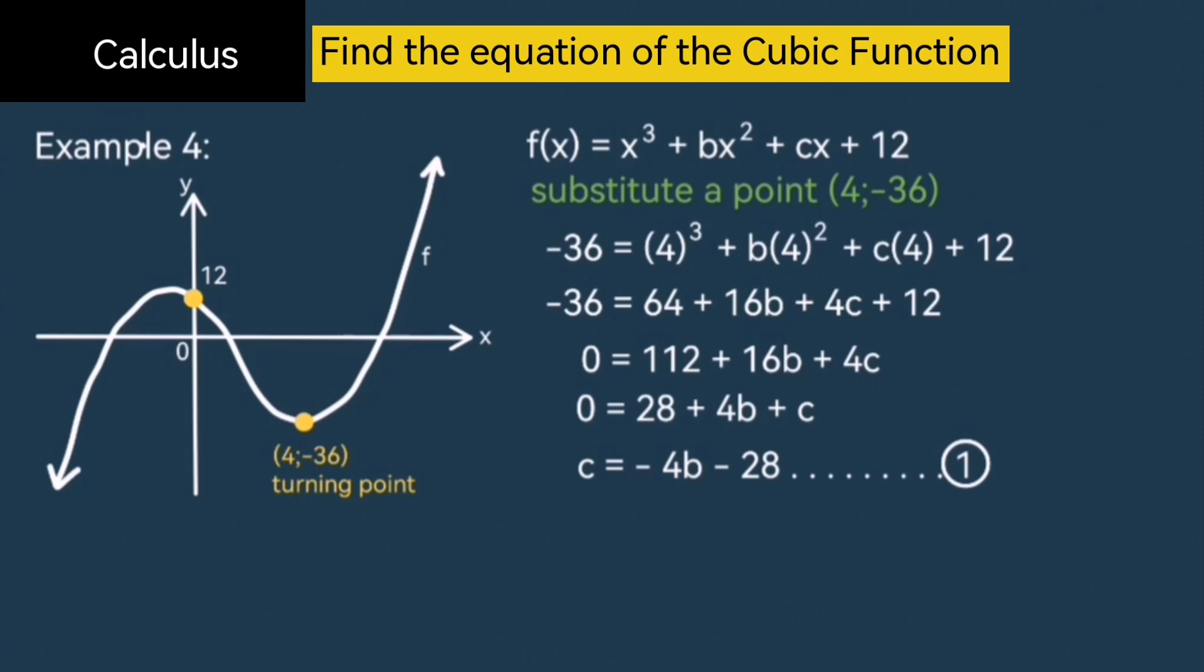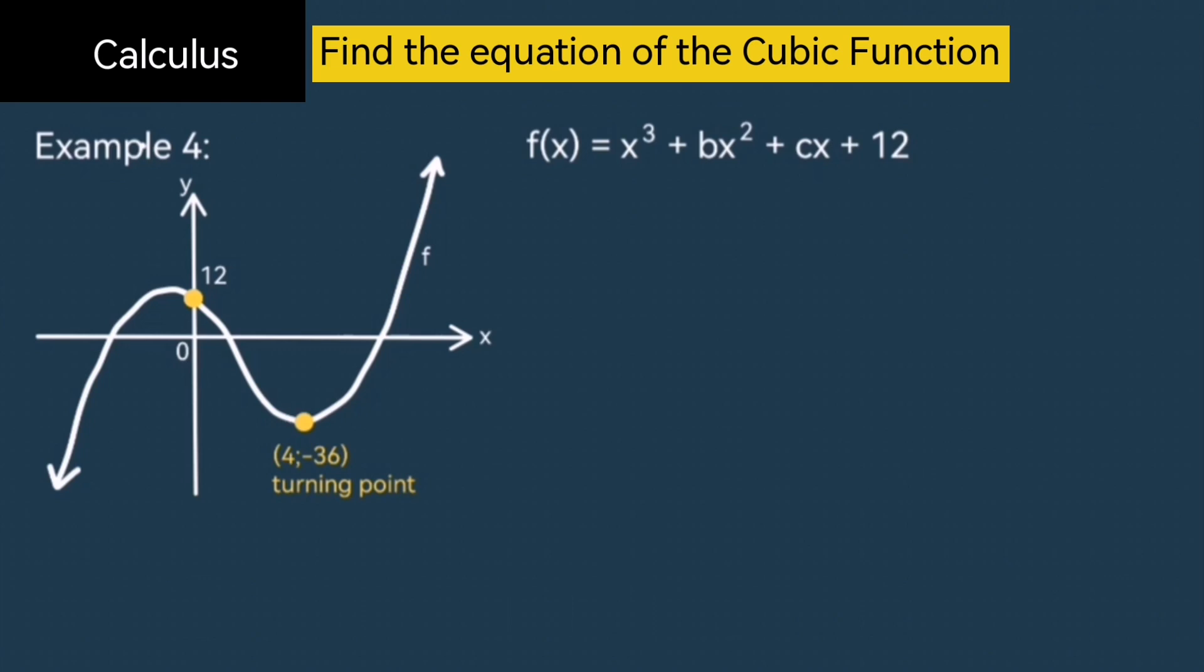You still now need to find a second equation. And since we don't have any other points on this graph to substitute, we've already substituted the y-intercept and the turning point, I need to resort to this fancy tactic I'm going to show you now. We know that the derivative of a function is its gradient, right? Now, at the turning point where x is equal to 4, the gradient is 0. So that means the derivative where x is 4 is 0. This would be my second equation.